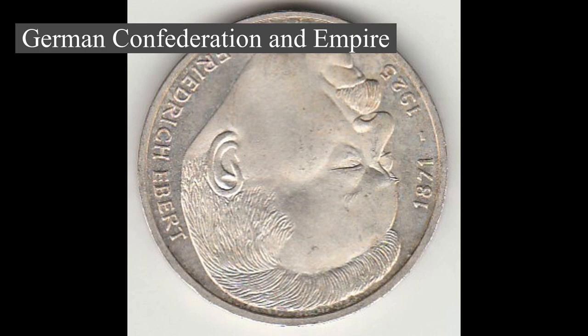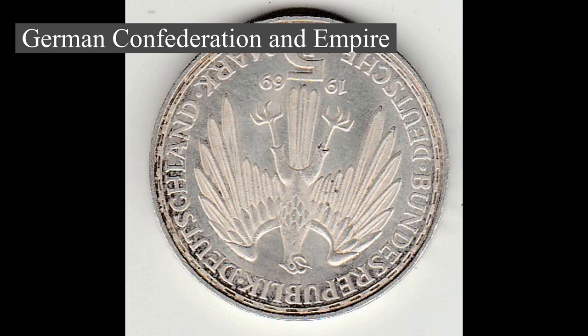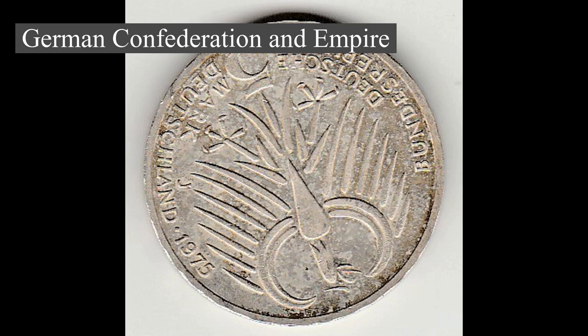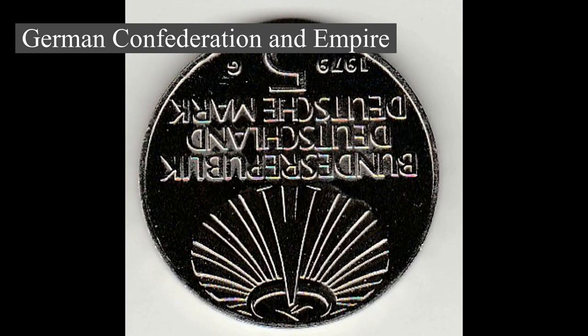King Frederick William IV of Prussia was offered the title of emperor, but with a loss of power. He rejected the crown and the proposed constitution, a temporary setback for the movement. King William I appointed Otto von Bismarck as the Minister-President of Prussia in 1862. Bismarck successfully concluded the war with Denmark in 1864. The subsequent decisive Prussian victory in the Austro-Prussian War of 1866 enabled him to create the North German Confederation, which excluded Austria. After the defeat of France in the Franco-Prussian War, the German princes proclaimed the founding of the German Empire in 1871.